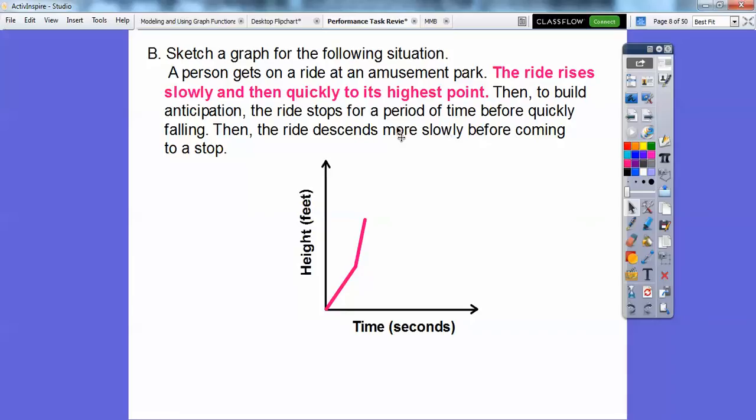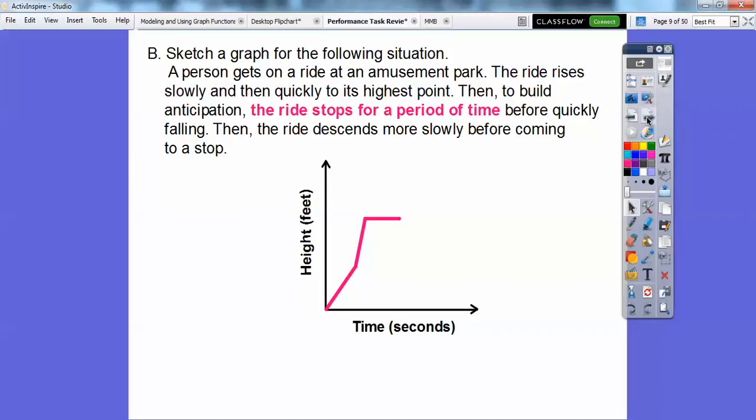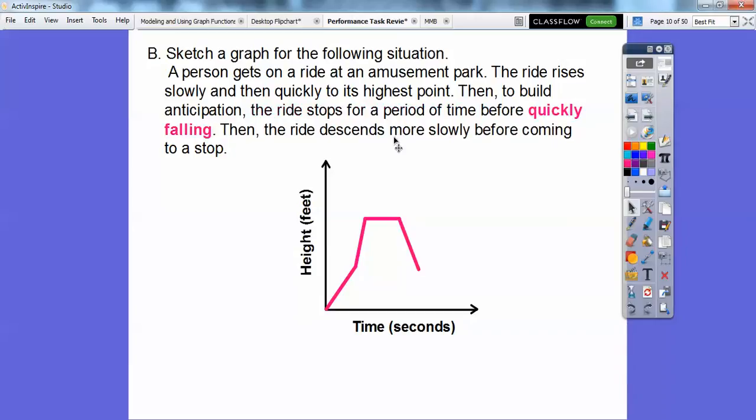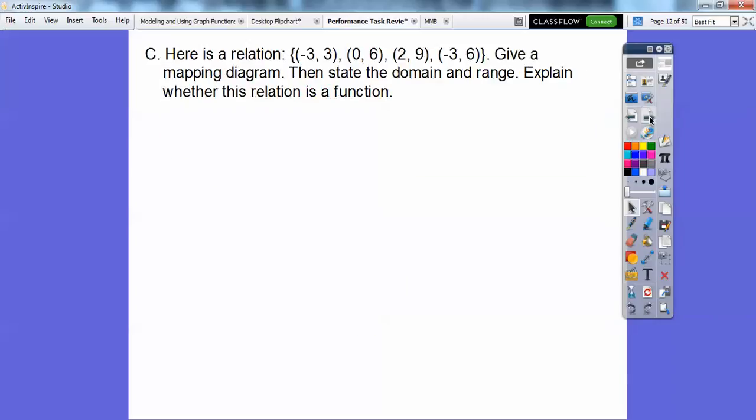And then this says, then to build anticipation, the ride stops for a period of time. Well, that's going to be a horizontal line for a period of time right there. So there's the ride stopping before quickly falling. Here it is quickly falling. And then it descends more slowly after coming to a complete stop. So it's going to go down a little bit more gradual right there. Okay, piece of cake.